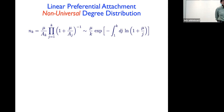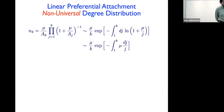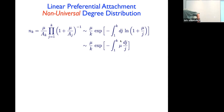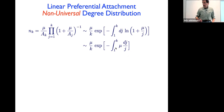For linear preferential attachment I apply the same approach: write the product as exp of sum of logarithms, convert the sum to an integral, expand for large j. For linear PA, a_k = k, so the integral becomes ∫ (−μ dj/j) = −μ log k, giving exp(−μ log k) = k^{−μ}. Including the k in the prefactor, we get n_k ~ k^{−(1+μ)}. Since μ depends on the amplitude of the attachment rate, the exponent is non-universal.